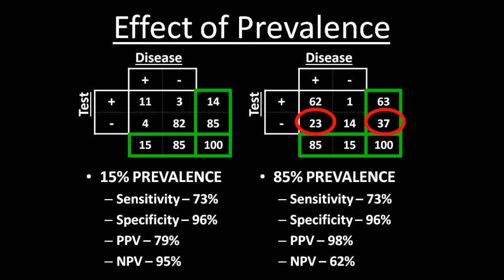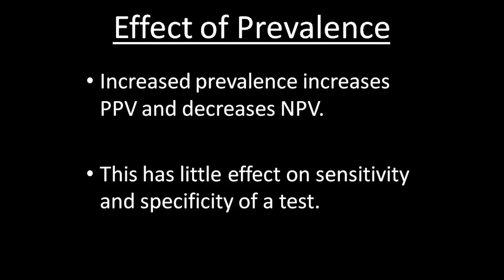This is important to note. Let's say we took a test that was just a coin flip. If we had a population where every single person had the disease and we flipped a coin, every time the coin said the patient has the disease it would be right. If we have a population where nobody has the disease, every time the coin says a patient has the disease it's wrong. So the prevalence of a disease affects positive and negative predictive value regardless of how good or bad the test is. Increasing prevalence increases positive predictive value and decreases negative predictive value. Increasing prevalence without changing disease severity has very little effect on sensitivity and specificity.